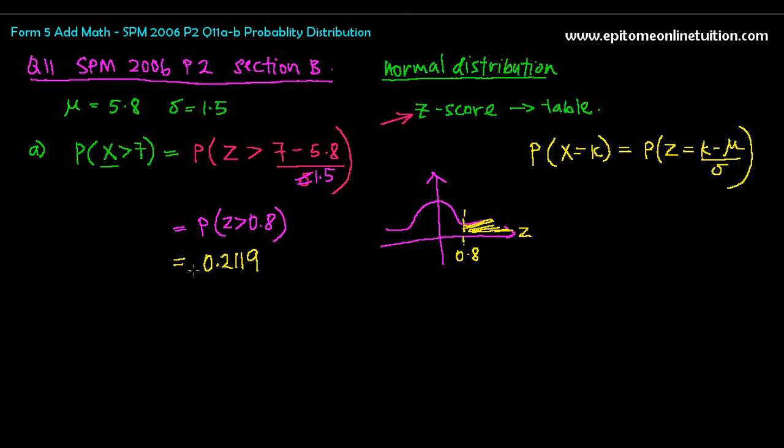So, this is the probability of getting lemons with diameter bigger than 7. So, now, again, put it into context. What does 0.2119 mean? It means that this particular orchard, if you go into the orchard and pick a lemon randomly, there is a 21.19% of you getting a really big lemon with a diameter more than 7 cm, the Grade A ones. So it's pretty good. That's two marks. Now, let's look at B.